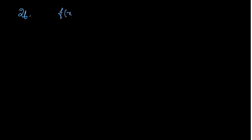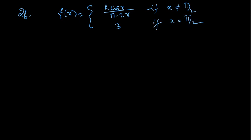So question 26 also — questions 26 to 29 — it is already stated to be continuous at a point, and we have to find out the value of k. For question 26, f(x) equals k·cos(x) divided by (π minus 2x), if x is not equal to π/2, and equals 3 if x equals π/2. It is given continuous at x equals π/2.